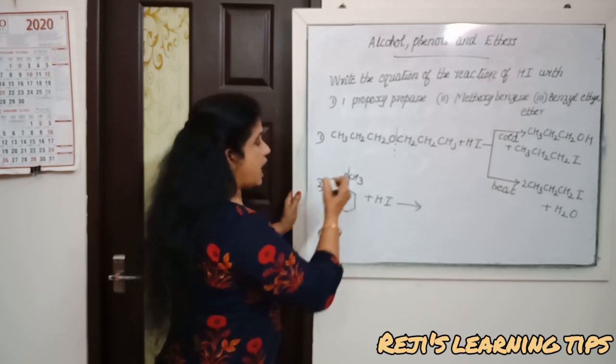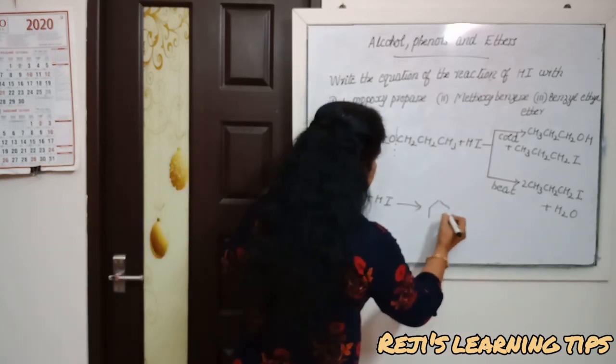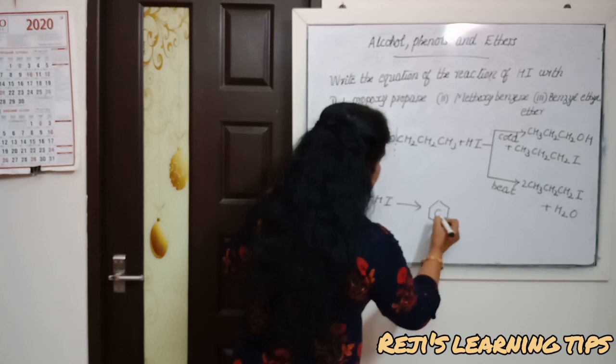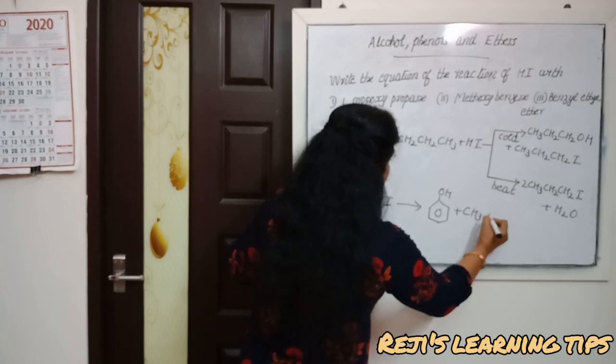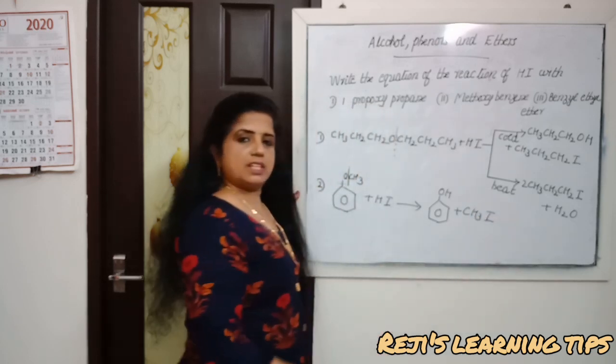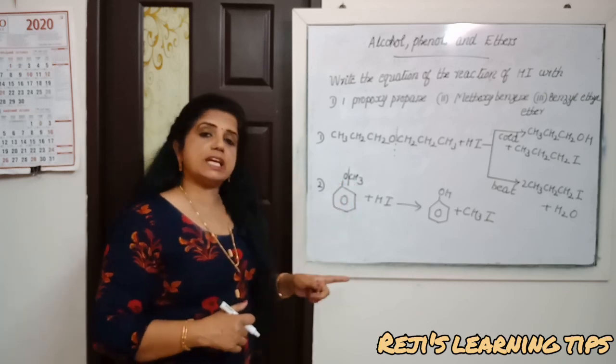The bond will break here between O and CH3. We will get phenol plus CH3I. The bond between CH3 and O is broken, giving phenol and methyl iodide.